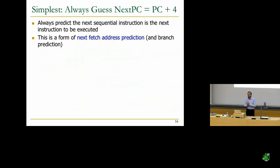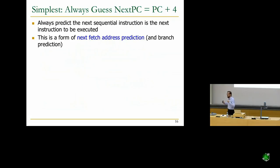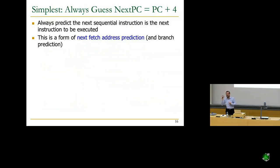The simplest form of branch prediction is predicting that the next PC is PC plus 4, or the next sequential program counter. You can do this easily if you know the instruction size. In MIPS ISA the instruction size is fixed. In x86 ISA, you don't know the instruction size until you decode — so x86 is much more complicated even for this.